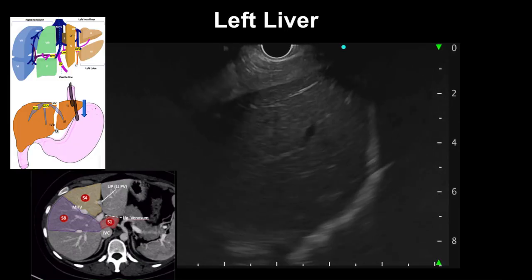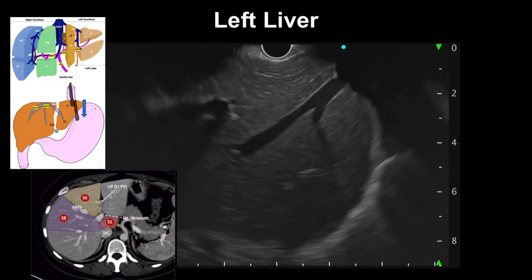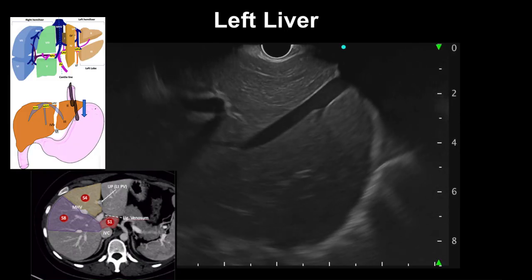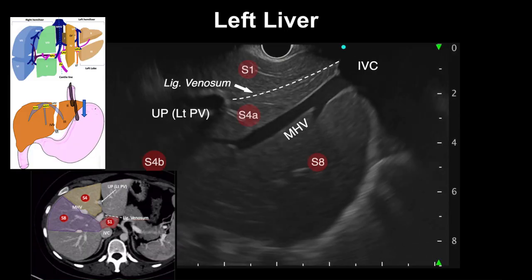With a tiny adjustment of the scope, the middle hepatic vein can be seen below as a tubular anechoic structure maintaining its diameter. From this position, the ligamentum venosum divides segment 1 — closer to the transducer — from segment 4a, which is divided from segment 8 in the lower right part of the screen by the middle hepatic vein.